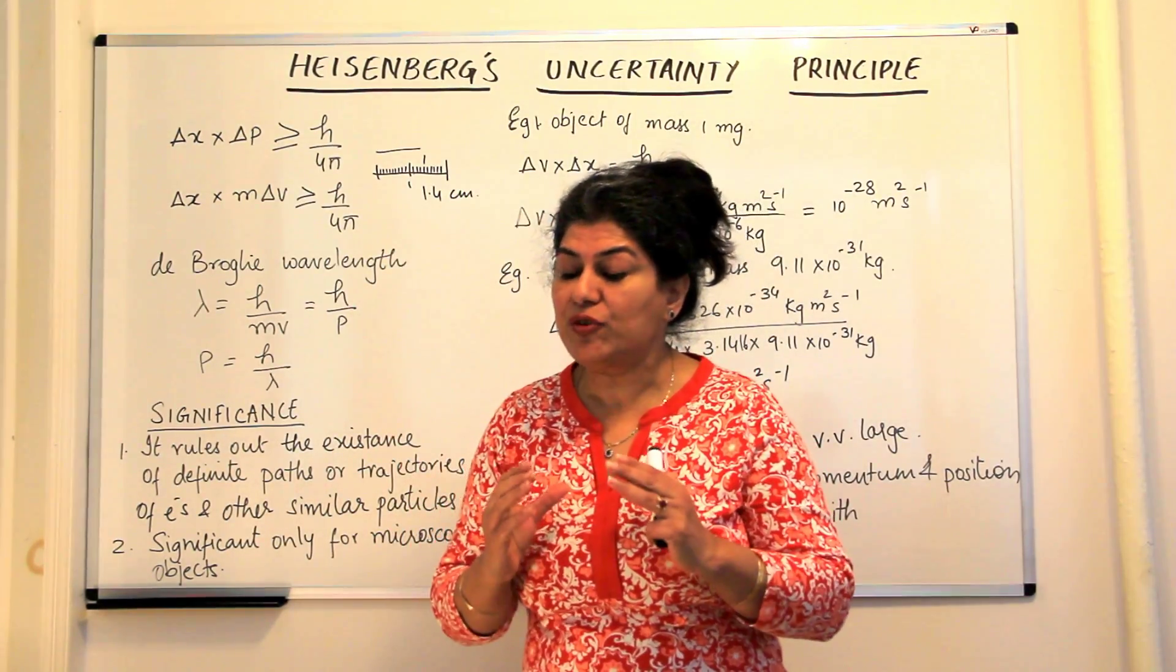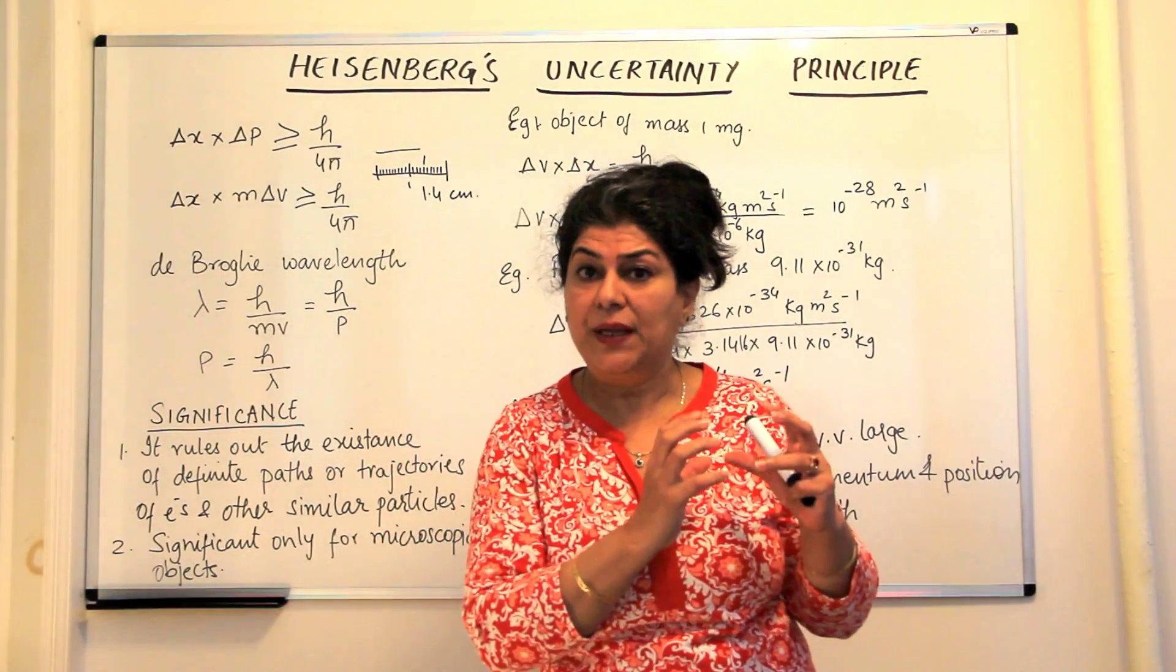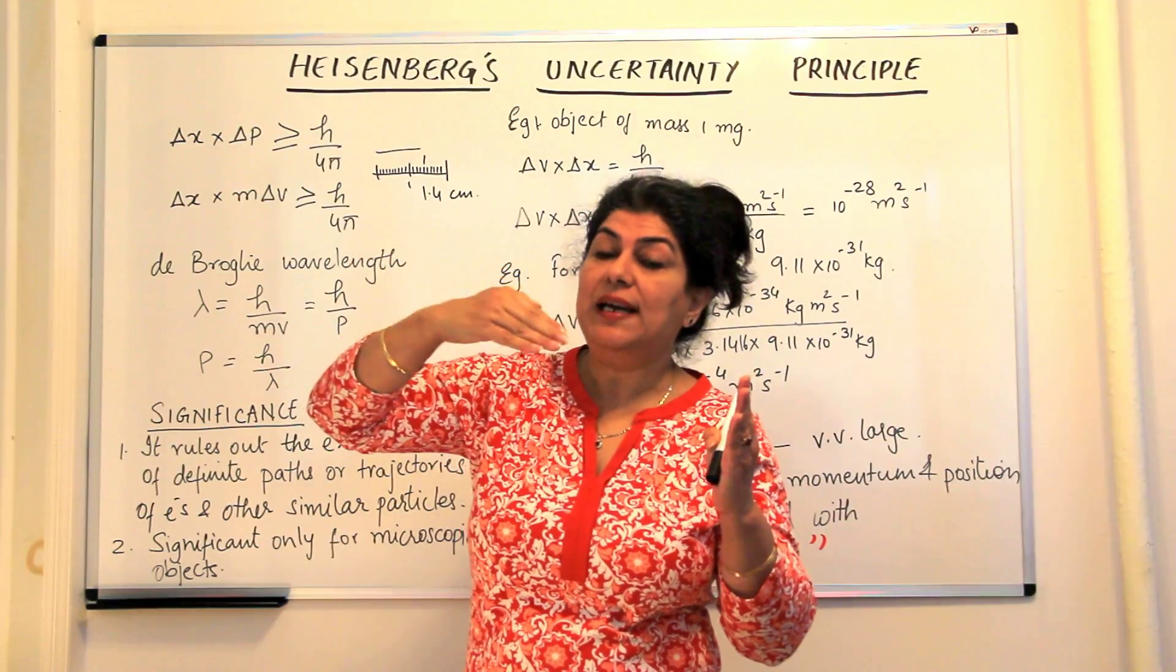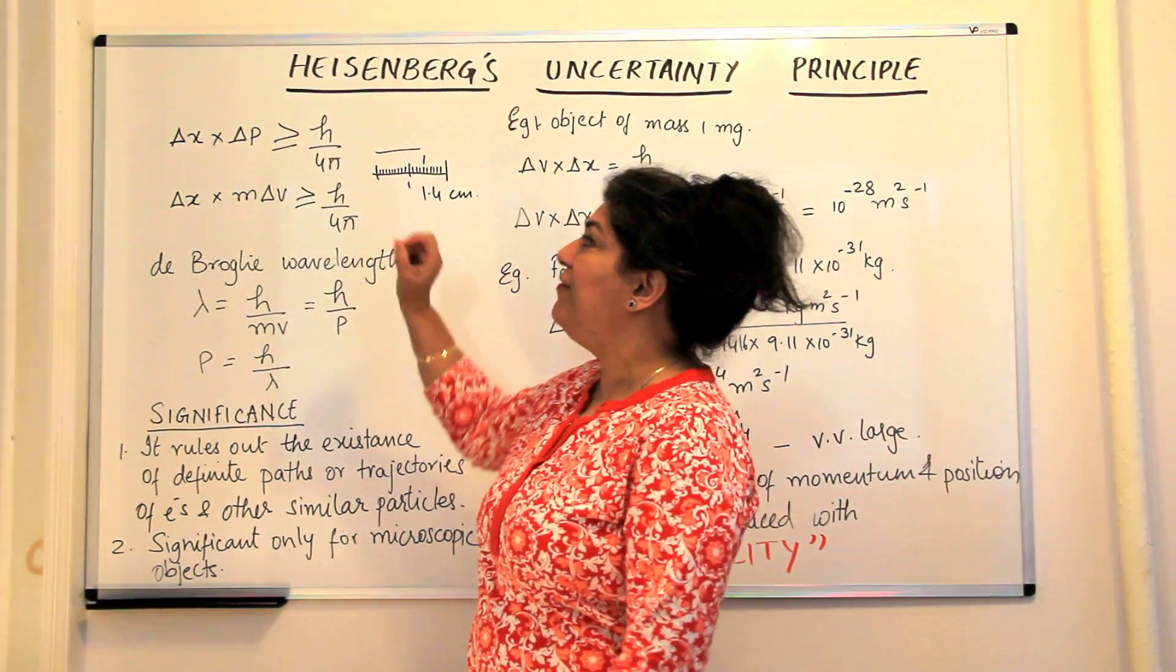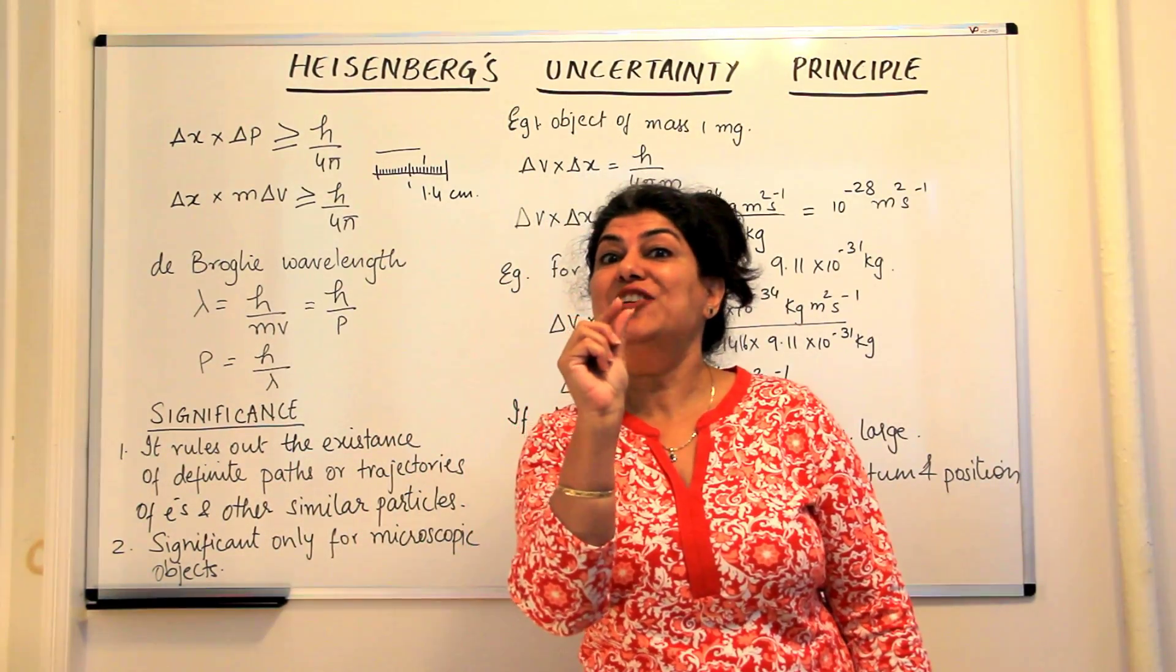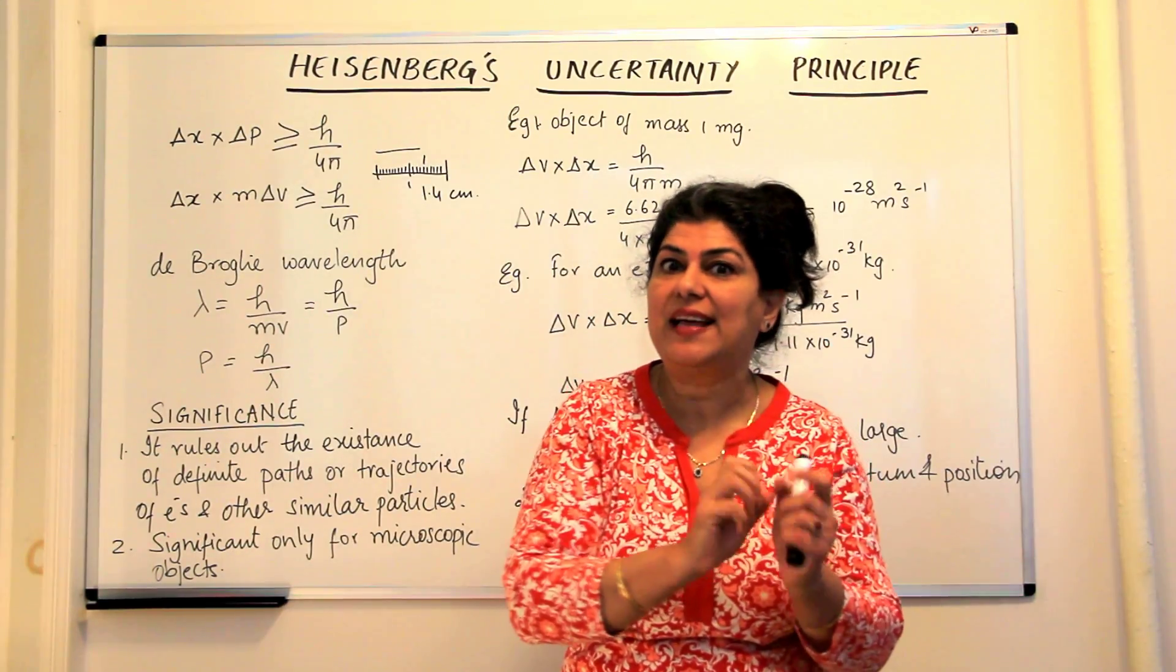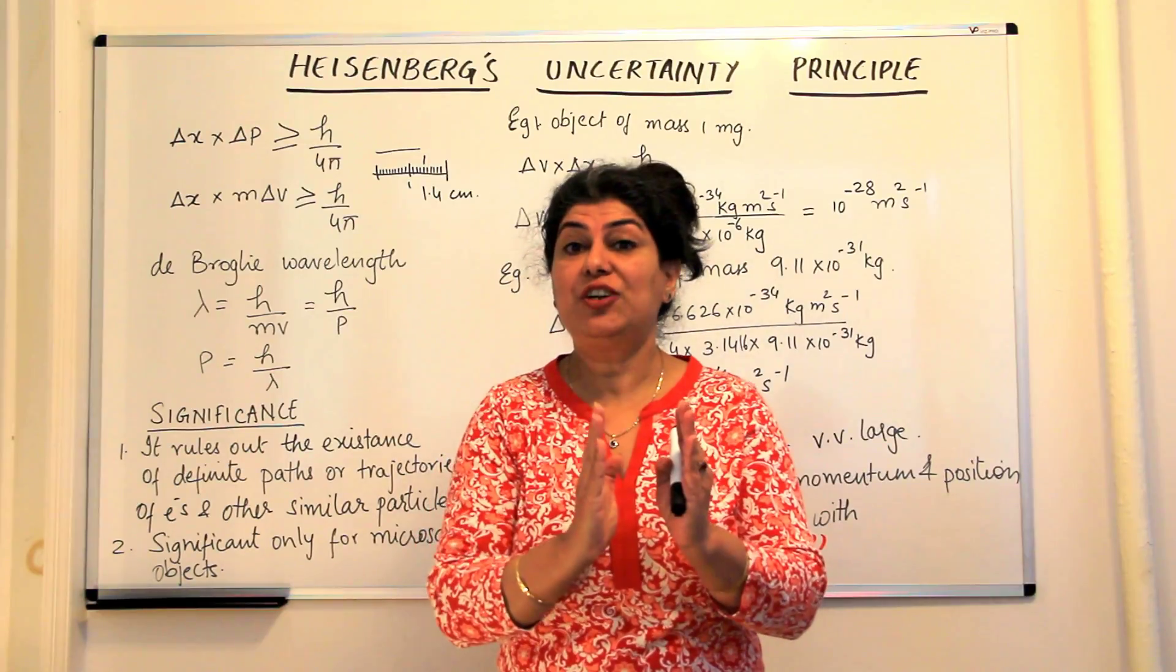How is this significant? Heisenberg felt that if we had to find out the exact position of an electron in an atom, then we should put light over it, electromagnetic radiations over it, which should have a wavelength smaller than the size of an electron. It's only when you have a wavelength smaller than that, that you would be able to tell what is the position of the electron.